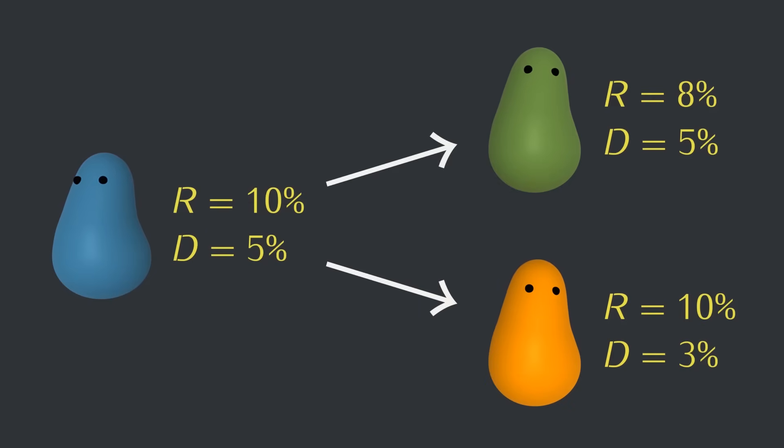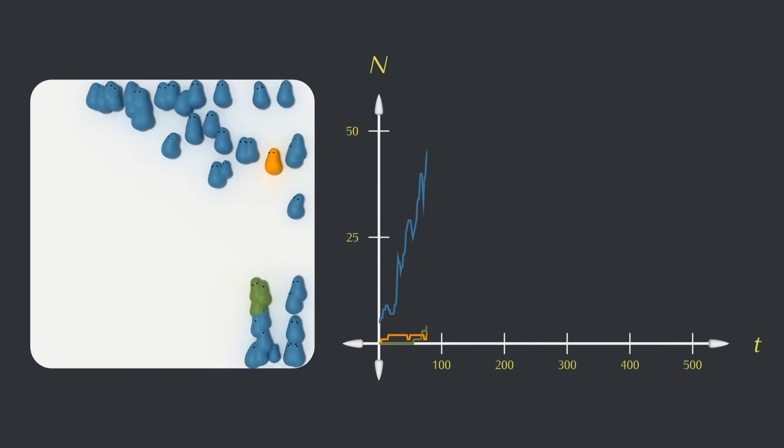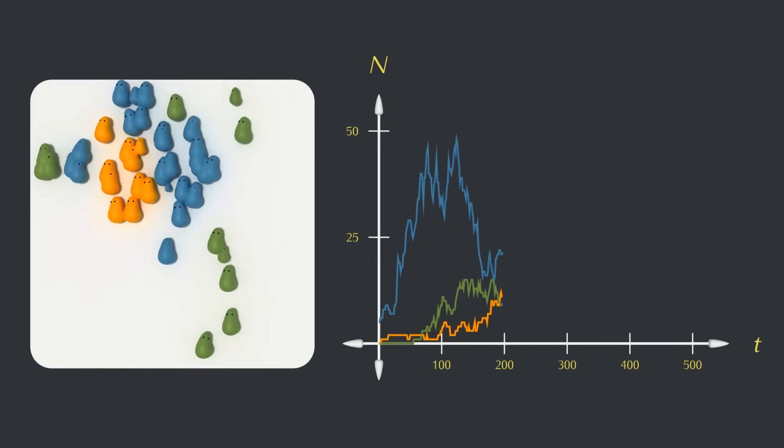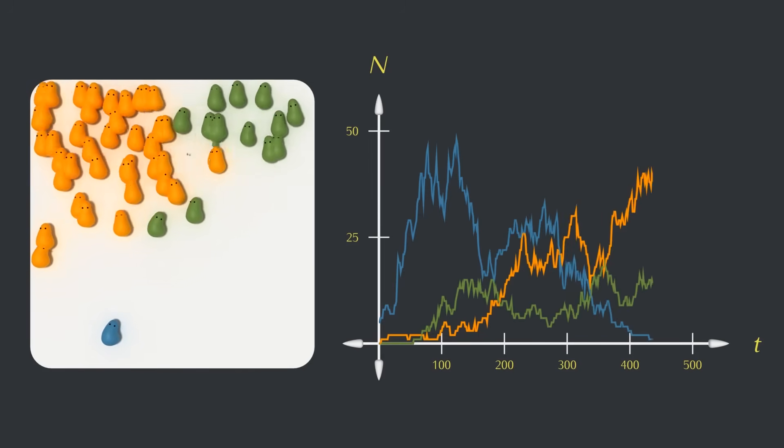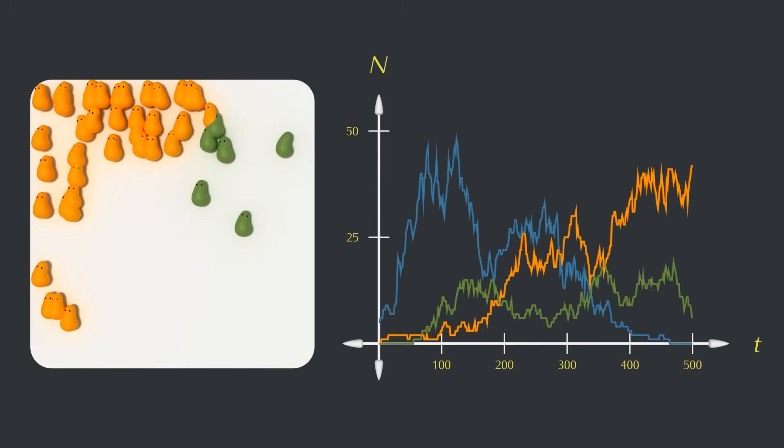If we start a simulation with a few blue creatures, how would you expect things to go? As you might have guessed, orange eventually takes over. It's not enough anymore for blue to be good at surviving in isolation. It now needs to be better than its competitors to maintain numbers.